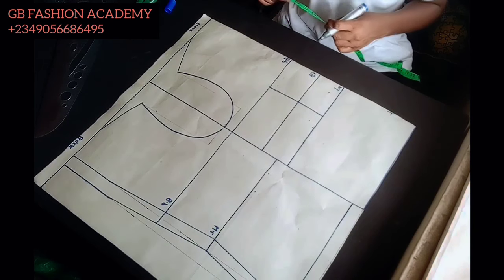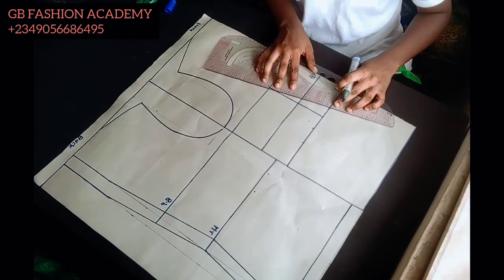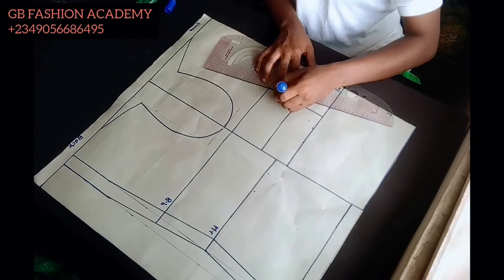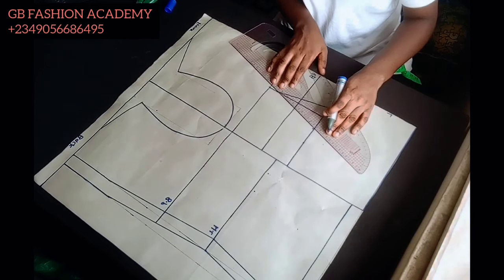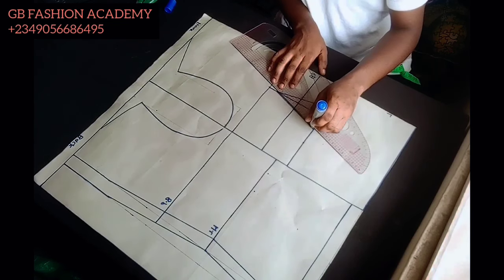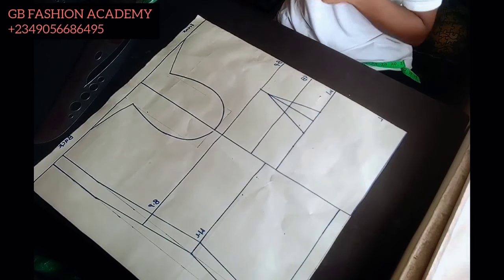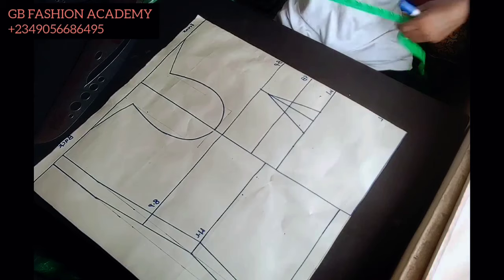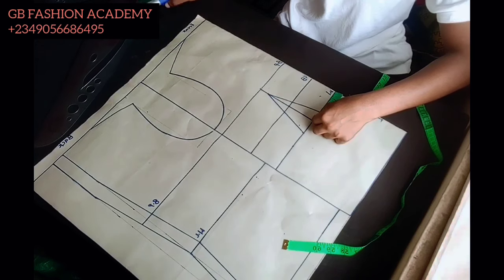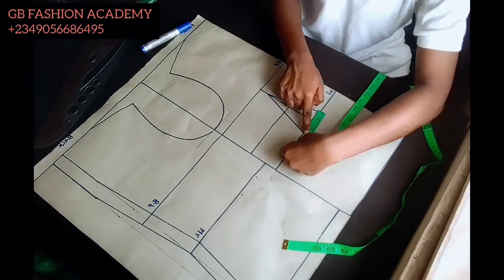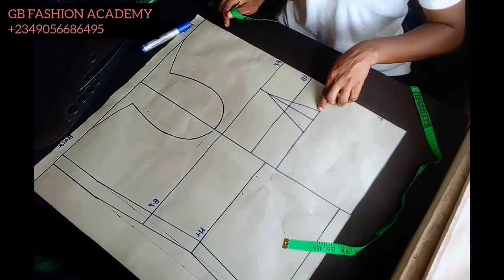The excess I have on my waistline after marking my waist circumference is two inches. Towards one side I mark 0.75 and towards the other side I mark 1.25, making it two inches for my dart. By the time you measure from this point to this point excluding the dart, you will have your accurate waist circumference.